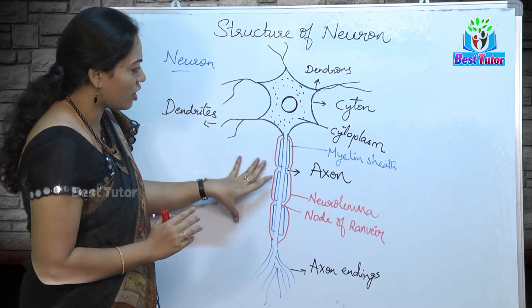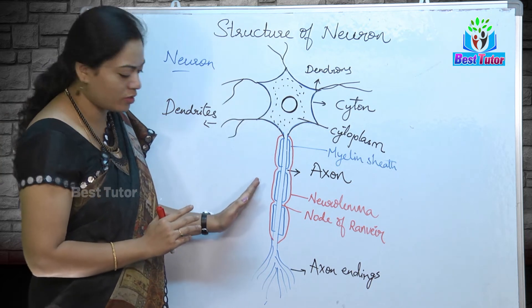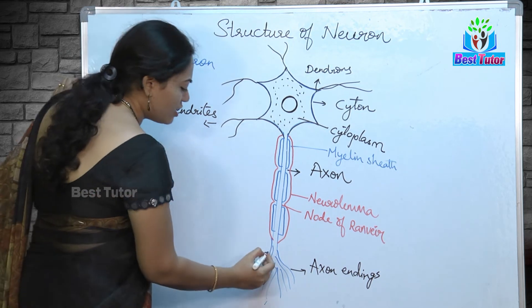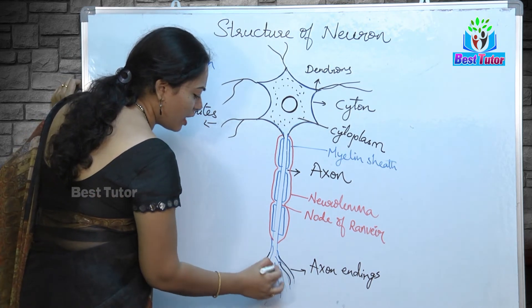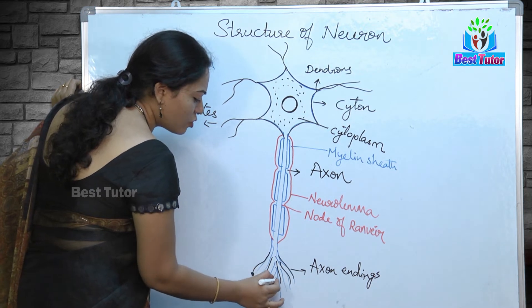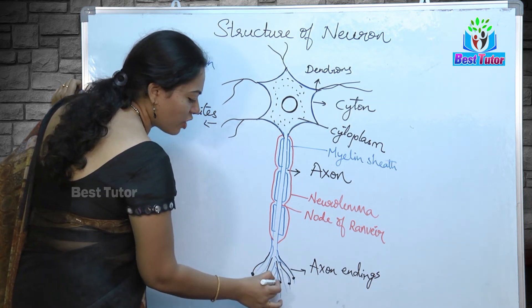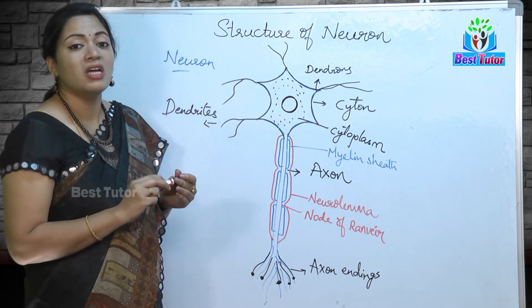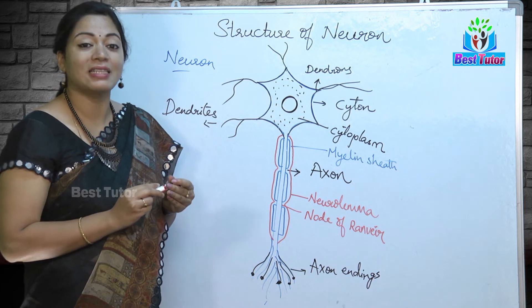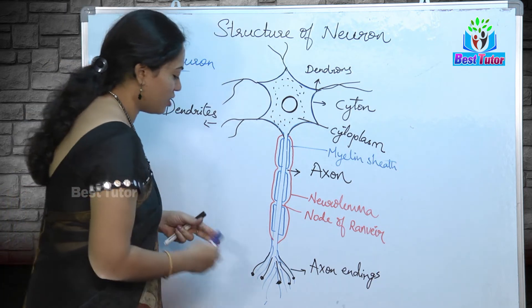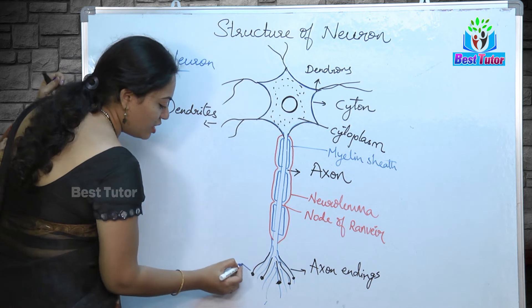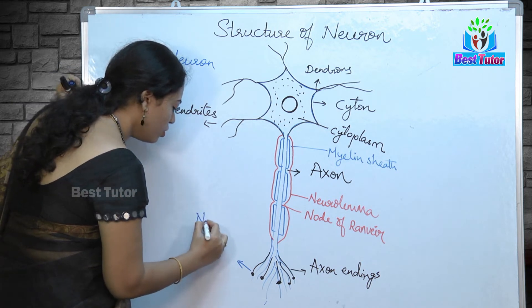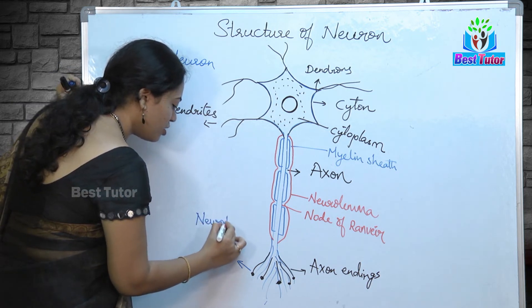The function of neurolemma is to protect the myelin sheath as well as the axon. At the axon endings, there are finger-like projections and at the end of these axon endings we have expanded bulb-like structures. These bulb-like structures are the ones which secrete some chemical substances known as neurotransmitters.